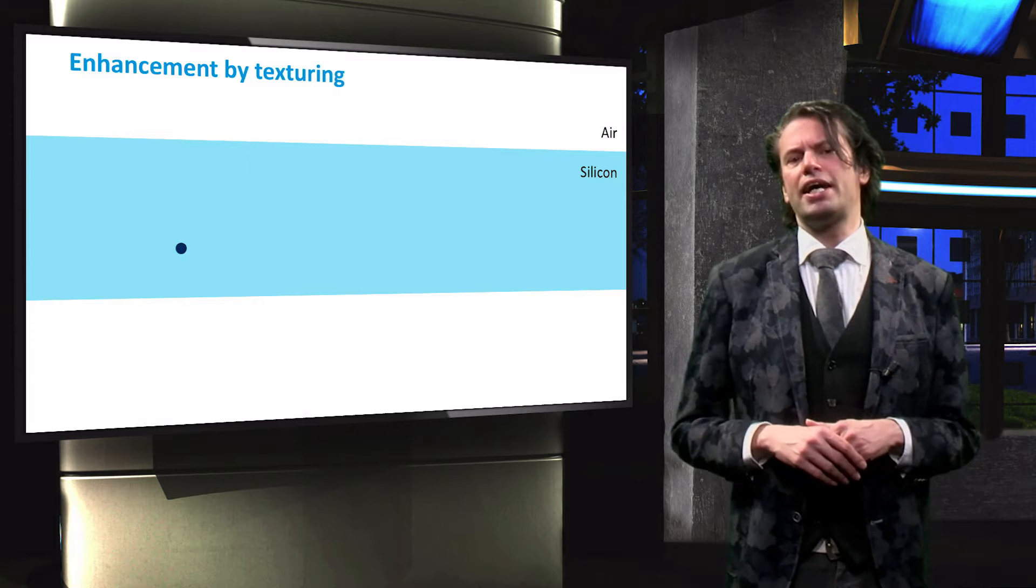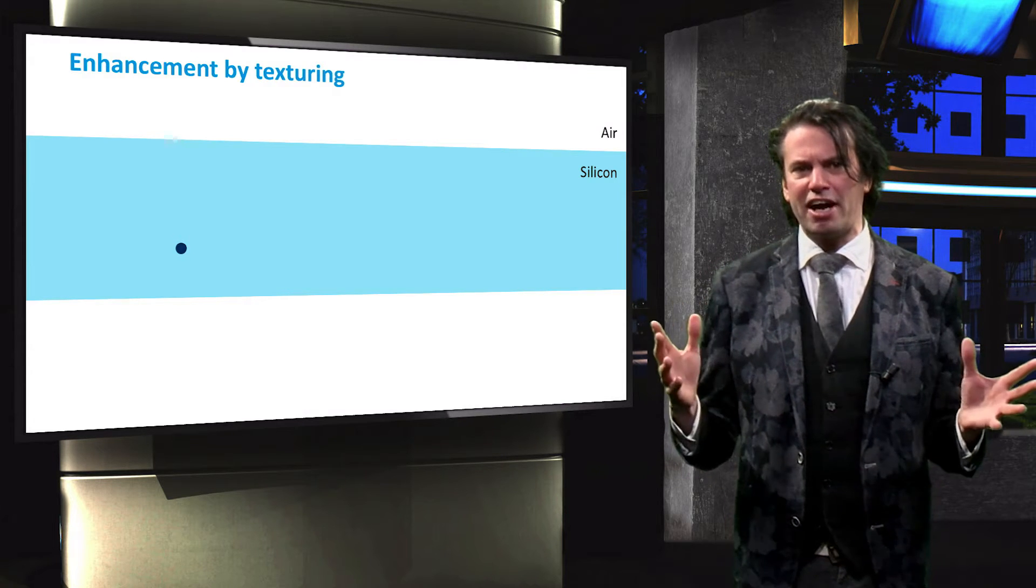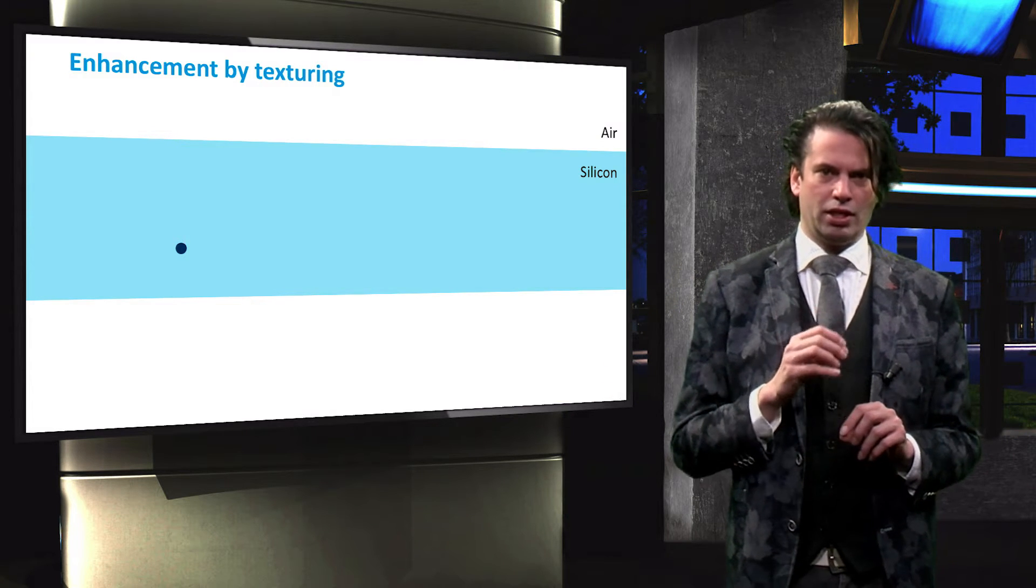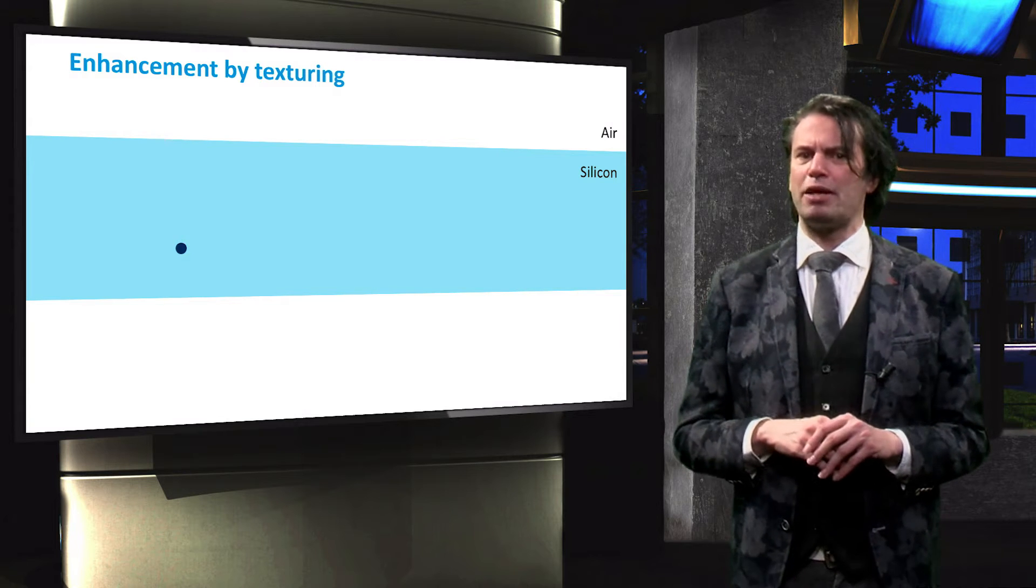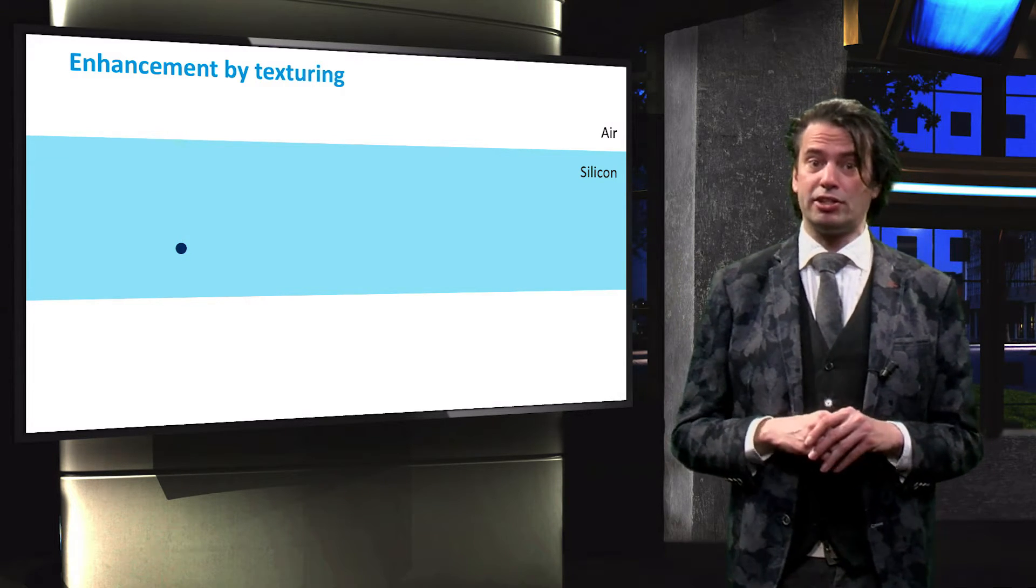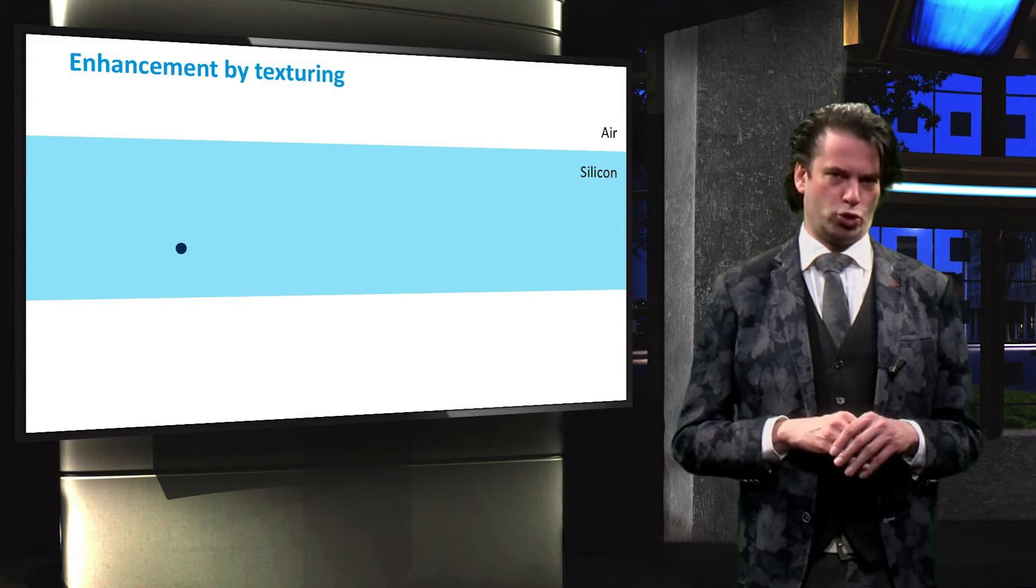The theory underlying the Yablonovitch limit is based on maximizing the area from which the light is incident on any point in the bulk. The derivation therefore can be best explained by taking a random point, for instance the dark blue one in the bulk of this light blue absorber layer.